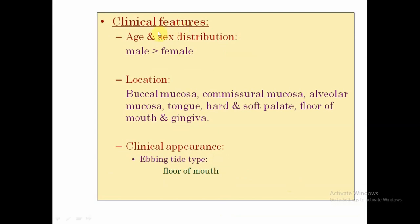Coming to the clinical features, males are more affected than females, likely due to smoking and tobacco usage habits. Age of presentation is typically around 40 years. Regarding location, Leukoplakia can occur in the buccal mucosa, commissural mucosa, alveolar mucosa, tongue, hard and soft palate, dorsum of tongue, and gingiva — these point more towards smoked forms. In smokeless tobacco forms, the vestibular region is more commonly involved. Buccal mucosa is the most commonly associated area.